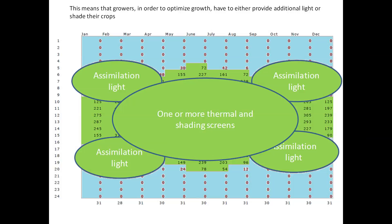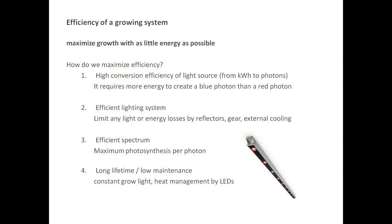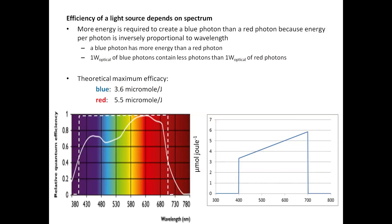In order to maximize growth, we need efficient lighting systems. Efficient lighting consists of a fixture with a high conversion efficiency — it needs to efficiently transform electrical energy into photons. Light losses need to be minimized and we need to provide an efficient spectrum. Lights with a long lifetime and low surface requirements are also needed. The efficiency of a light source depends largely on the spectrum provided. Because the energy of a photon is inversely proportional to its wavelength, more energy is required to create a blue photon compared to a red photon. The maximum efficacy of a blue LED is 3.6 micromoles per joule, whereas 5.5 micromoles of red light can be produced from the same amount of electrical energy.